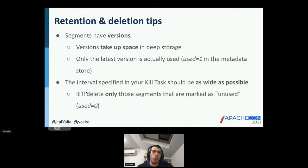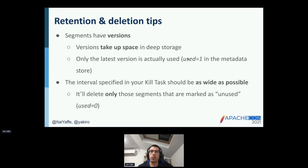Druid segments have versions — whenever you ingest data for a time interval that already has existing segments, new versions are created. While all versions take up space in deep storage, only the latest version of each segment is actually used, marked with used equals one in the metadata store. We strongly recommend specifying the kill task interval as wide as possible. Don't be afraid to do that — it will only delete segments marked as unused (used equals zero), which are not serving queries.